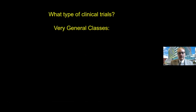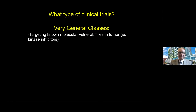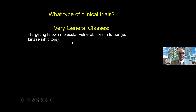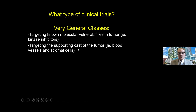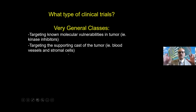What clinical trial categories are there? There are targeted therapies trying to target known molecular vulnerabilities in the tumor. For example, many tumor cells depend on enzymes called kinases — kinases are upregulated in pathways involved with tumor division and proliferation — so there are many kinase inhibitor trials. We can also try targeting the supporting cast of the tumor: we know these tumors depend on blood vessels and on myeloid-derived suppressor cells to keep growing. Trials try to target those, hoping that destroying the supporting cast makes the tumor more amenable to treatment.